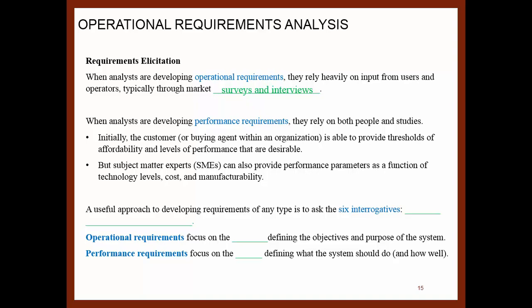For example, in our new building there are areas designed specifically for 3D printers. Those machines may not occupy as much space, but you need a specific type of ventilation for the materials to leave the building. A useful approach to developing requirements of any type is to ask the six interrogatives: who, what, where, why, when, and how. We need to cover these six areas. Operational requirements focus on the why, defining the objectives and purpose of the system. The performance requirements focus on the what, defining what the system should do — what type of performance must be achieved.